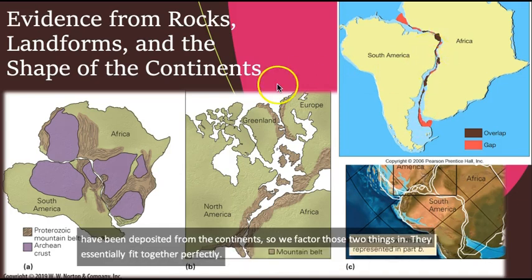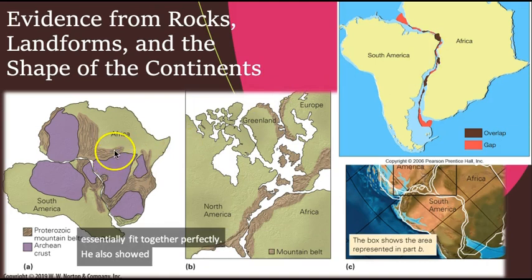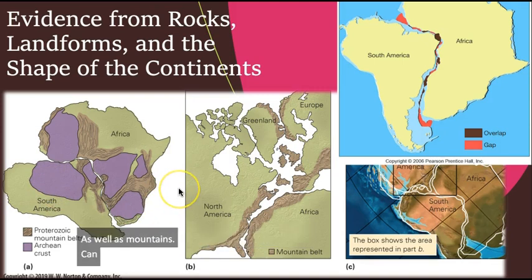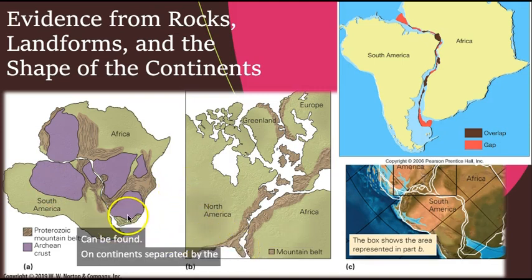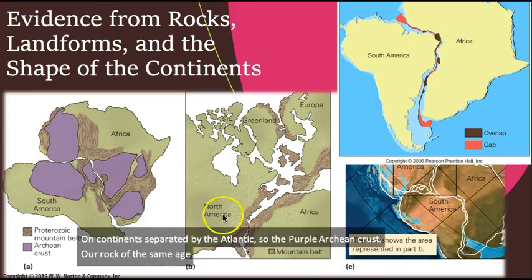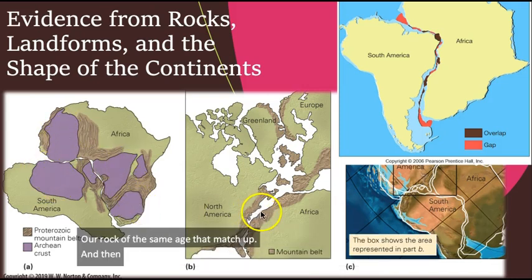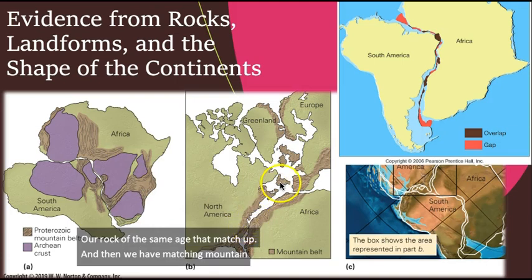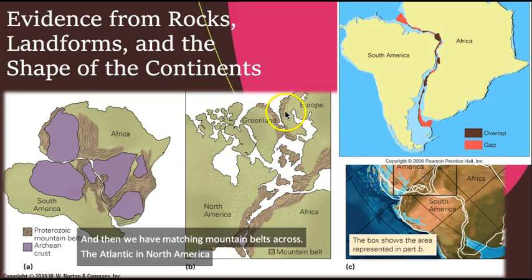He also showed that rocks of the same type and age, as well as mountains, can be found on continents separated by the Atlantic. So the purple are Archean crust, rock of the same age that match up, and then we have matching mountain belts across the Atlantic in North America, Africa, Europe, and Greenland.